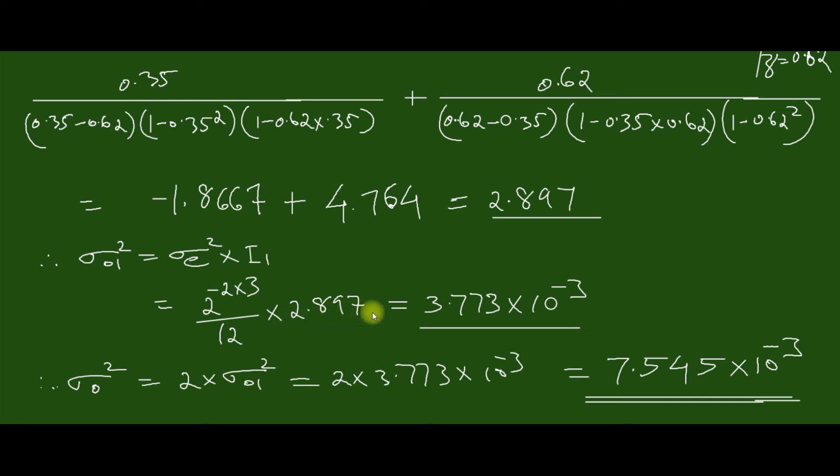into 2.897 is this value. Now the total output noise power is given by twice of that one, which gives 7.545 times 10 to the minus 3. So this is our final answer. Thank you.